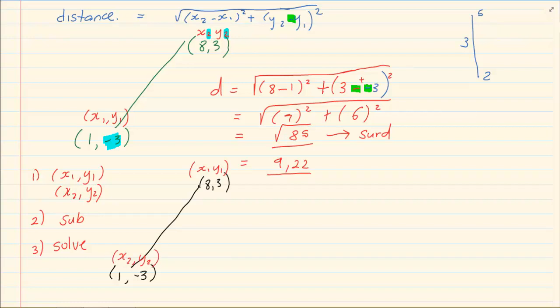Now we know the formula is d equals, and then we're going to substitute. Now we've got x2 as one, minus x1 as eight, close brackets all squared, plus, then we've got y2 as minus three, and then the formula says minus, and then y1 is three, all squared.